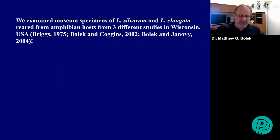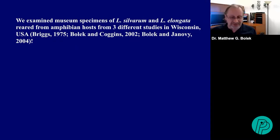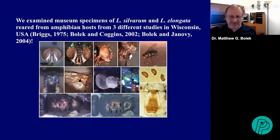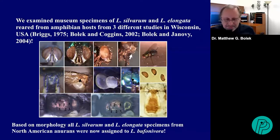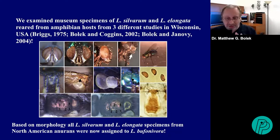I got excited and told Terry we can have museums come to the rescue. Parasitologists in general deposit voucher specimens in museums because these organisms are hard to identify and their taxonomical status changes — and I did that in both of my studies. We examined museum specimens of Lucilia silvarum and Lucilia elongata reared from amphibian hosts from three different studies in Wisconsin. Terry dissected some specimens and used his new keys to identify the flies. Based on morphology, all specimens from those three studies were now assigned to Lucilia bufonivora.